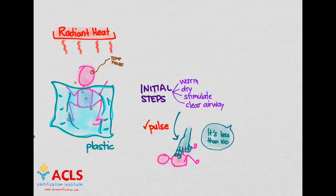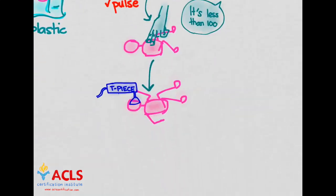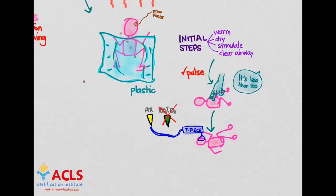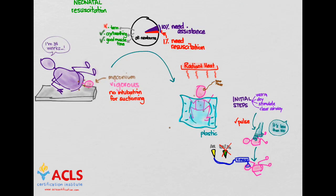You know to yourself that it's less than 100, so it's time for some positive pressure ventilations. You find a T-piece neonatal respirator and put that on the patient, and you attach that to room air. You skip the oxygen because you know that oxygen could be potentially toxic. You also think this is a good time to hook up a pulse oximeter to the patient. But before you do that, for a millisecond, you compliment yourself that you did all of this in 60 seconds. You were adherent to that golden minute.